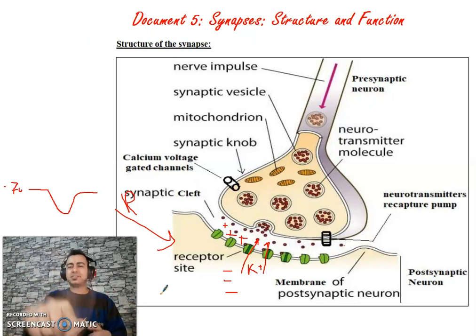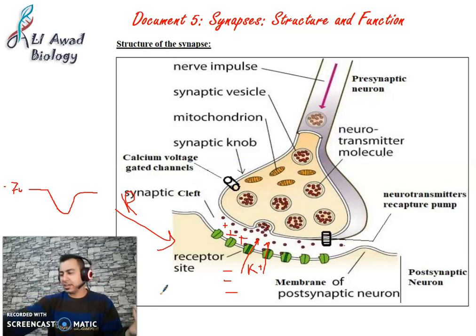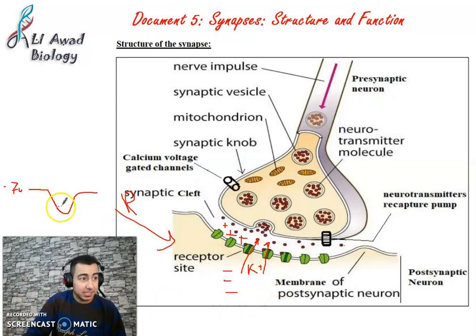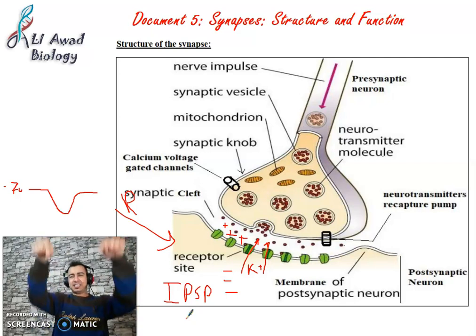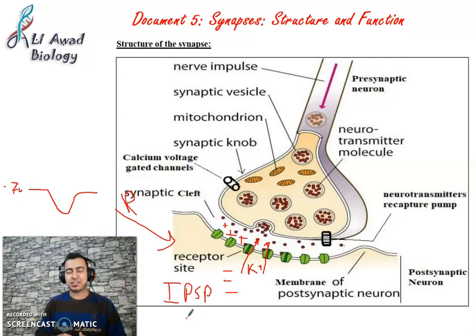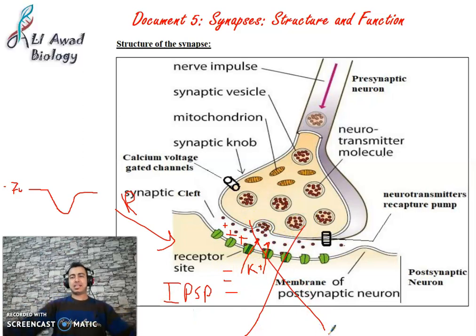An inhibitory synapse means no nervous message is transmitted. This post-synaptic potential is called inhibitory post-synaptic potential, or IPSP. It is inhibitory because it does not lead to an increase in the potential difference; instead, it leads to a decrease below minus 70 mV — hyperpolarization — meaning the nervous message is blocked.